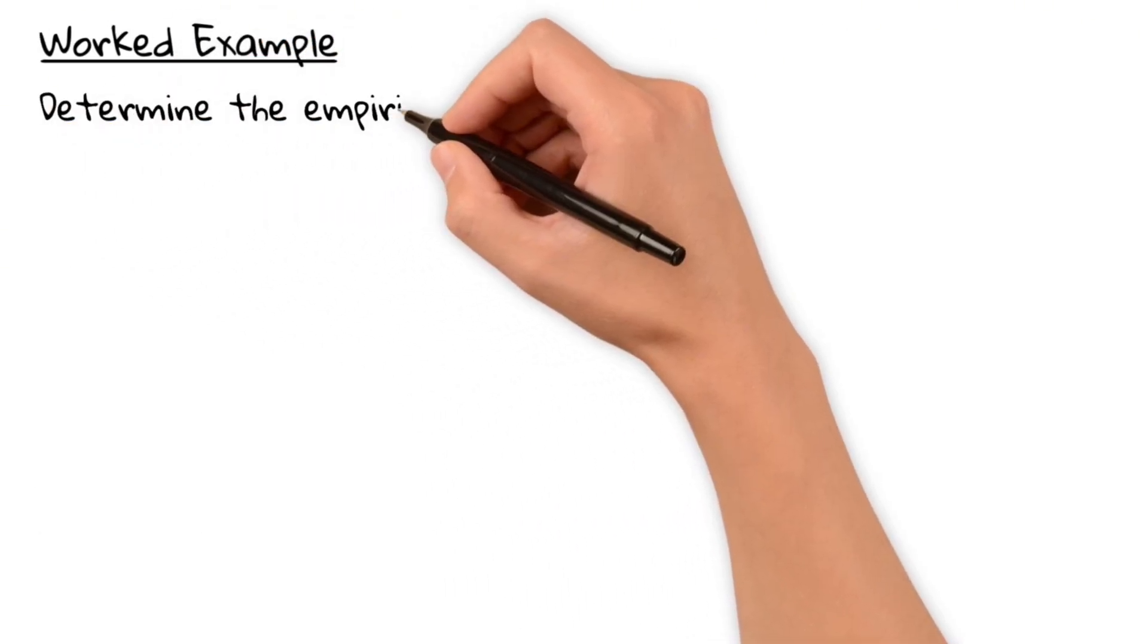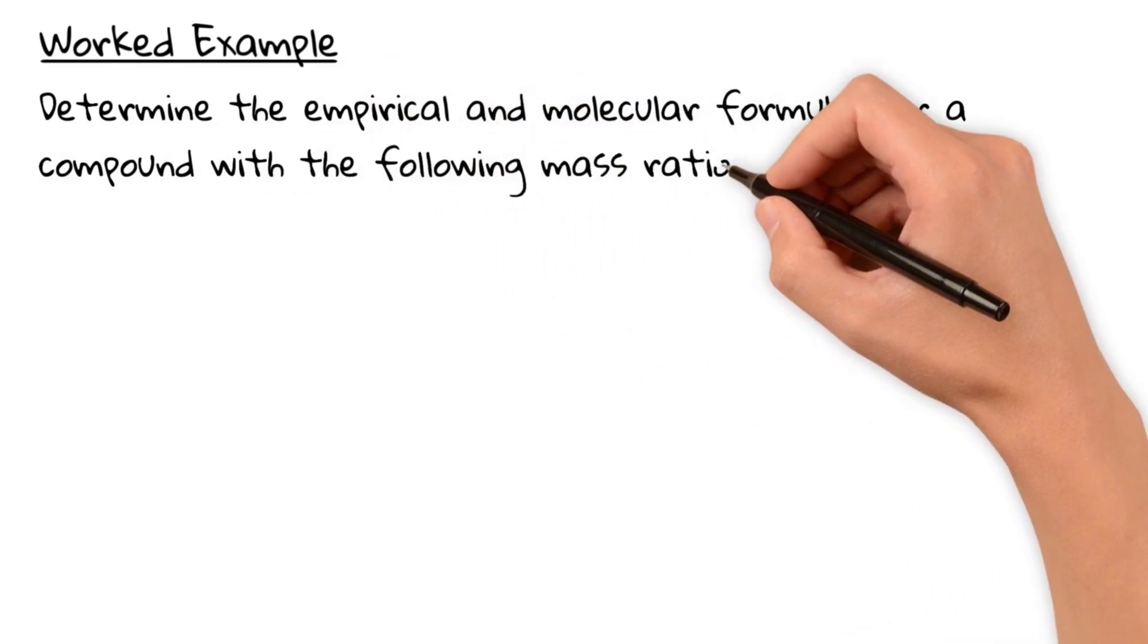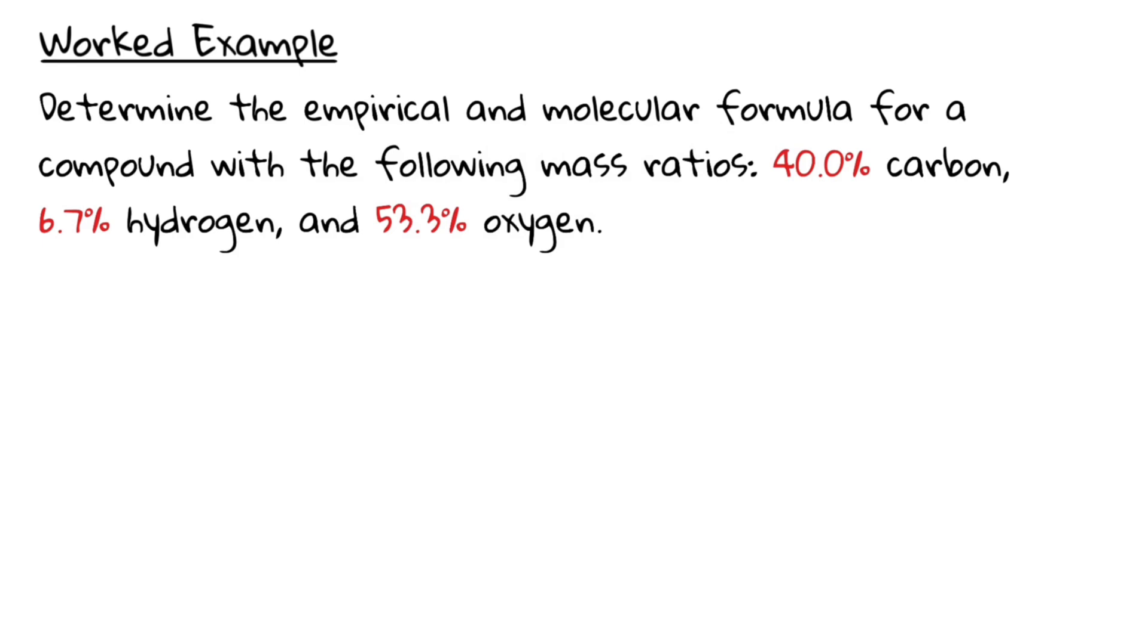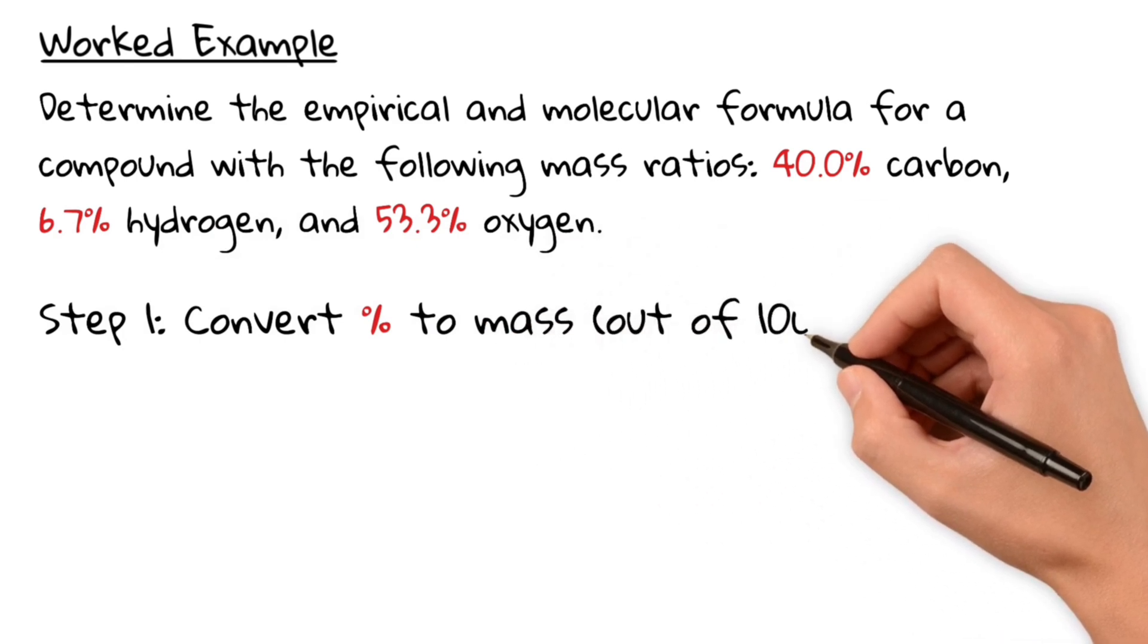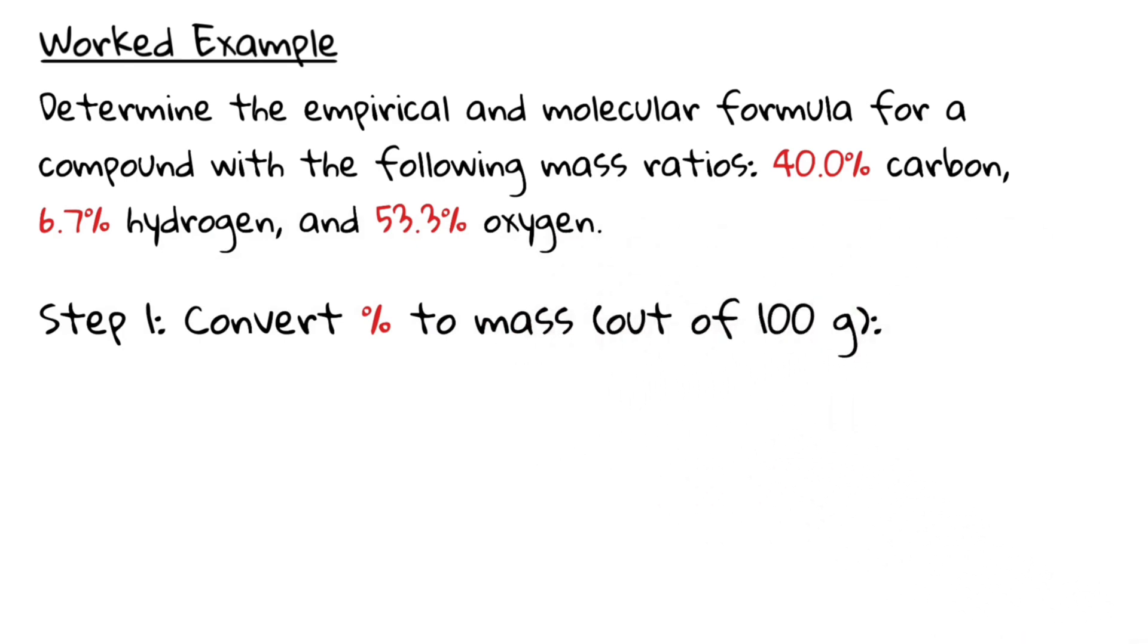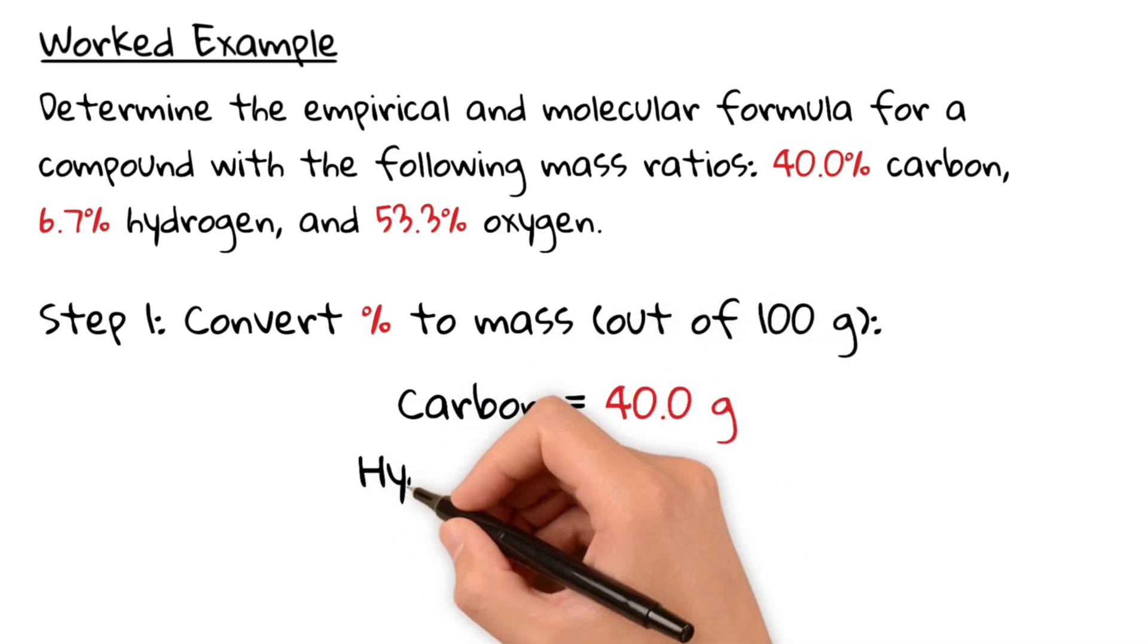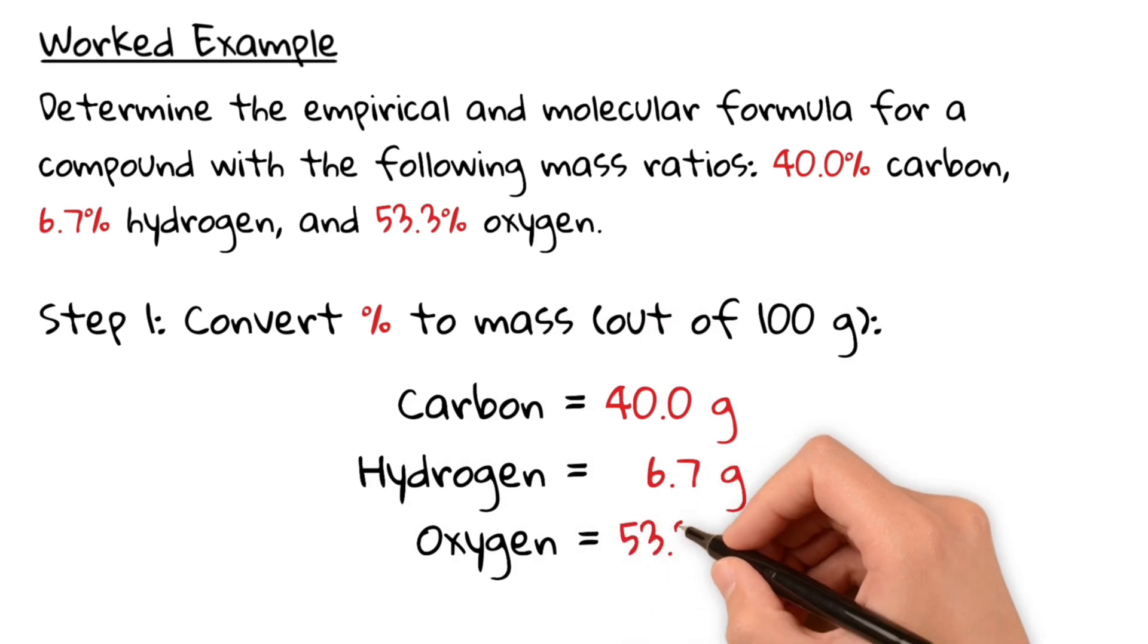Determine the empirical and molecular formula for a compound with the following mass ratios: 40% carbon, 6.7% hydrogen and 53.3% oxygen. As a first step, we simply rewrite each percentage as a mass in grams. So, we are assuming 40g of carbon, 6.7g of hydrogen and 53.3g of oxygen.